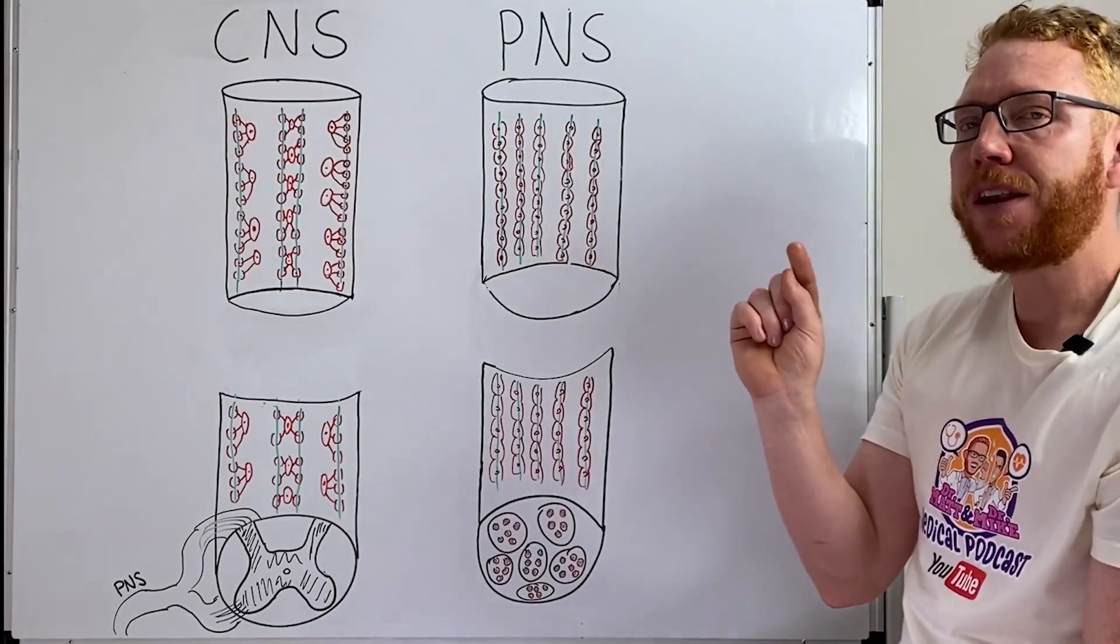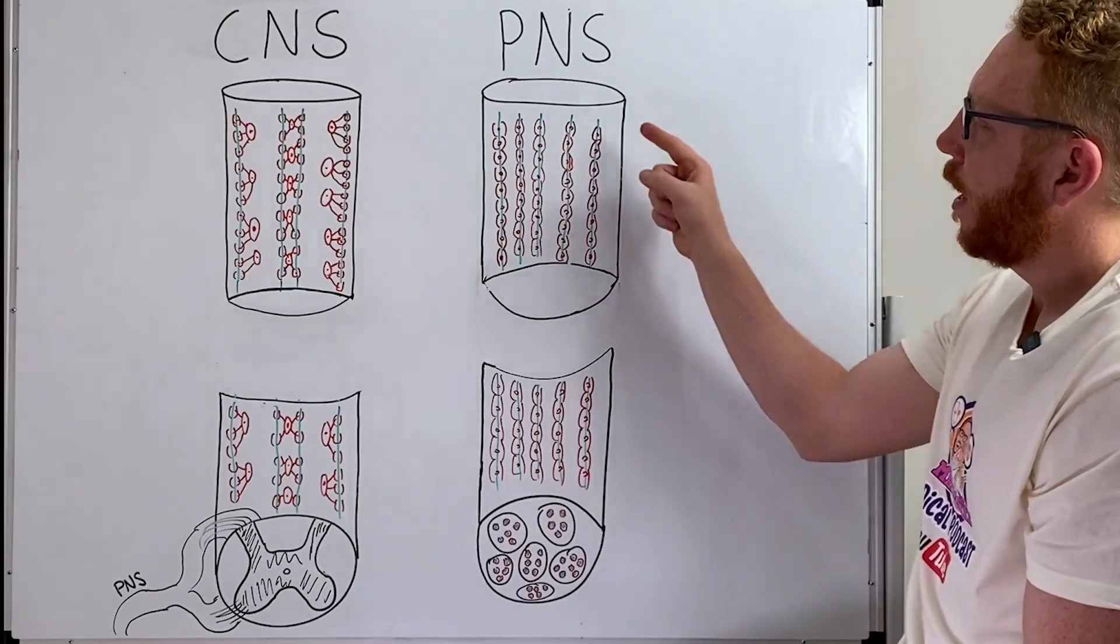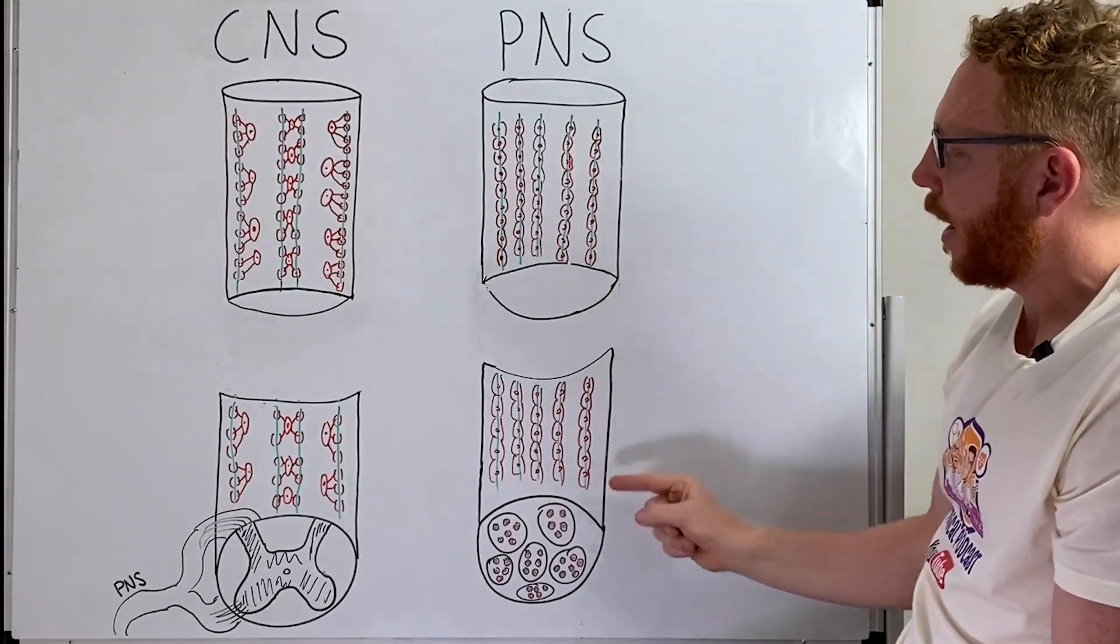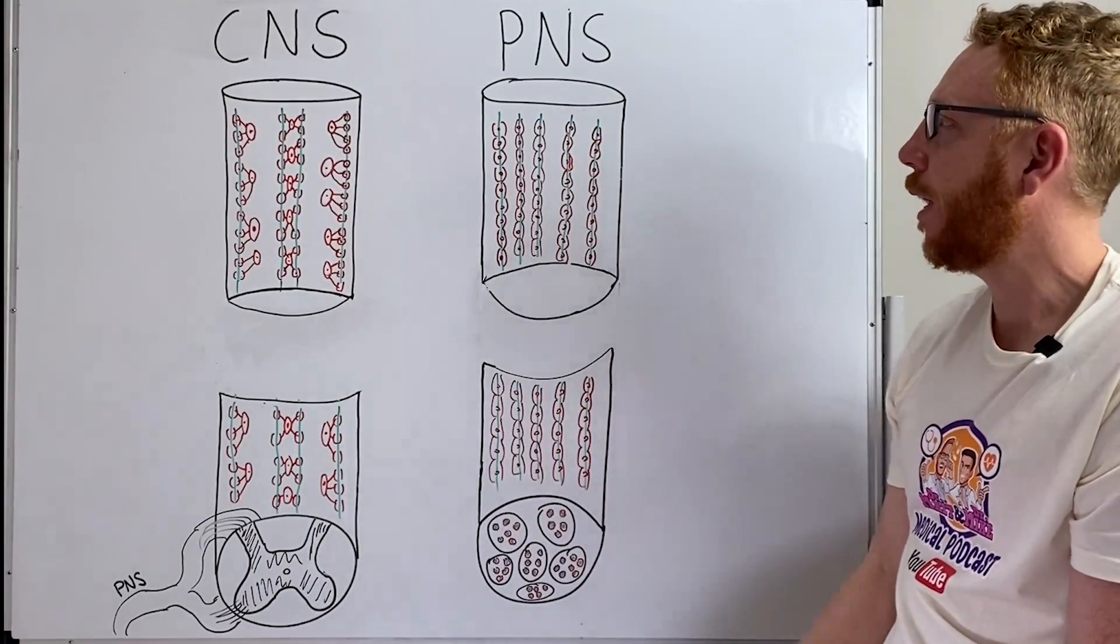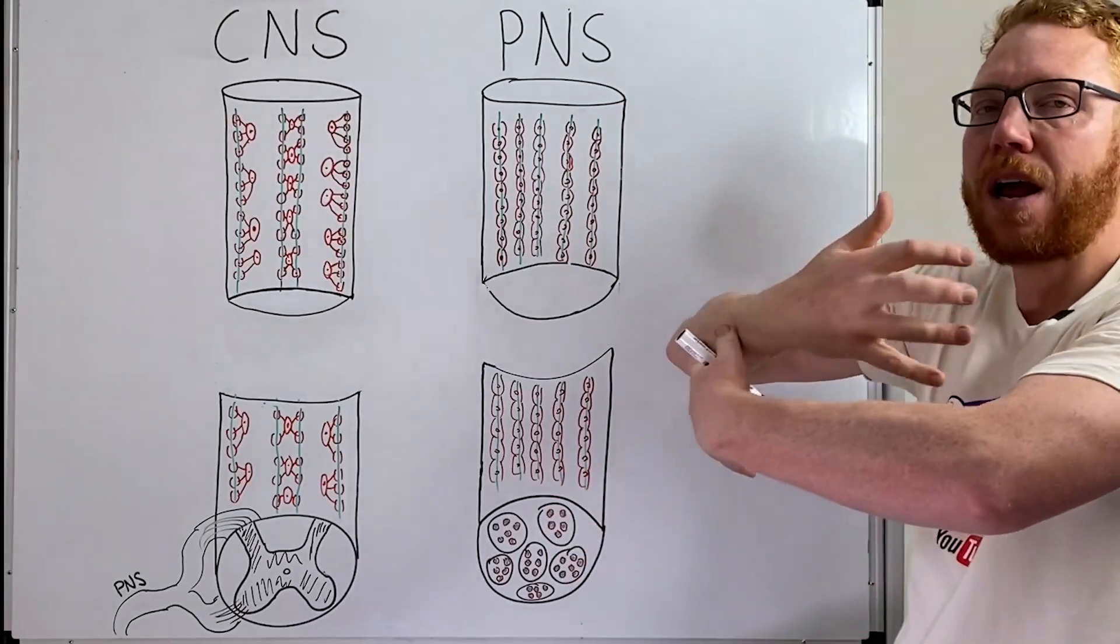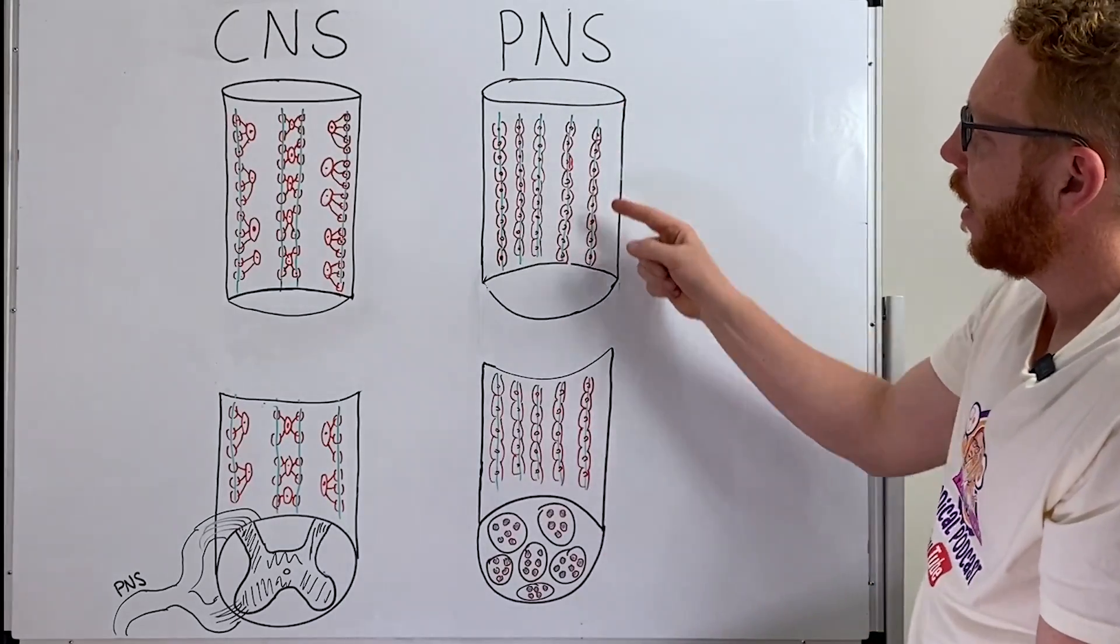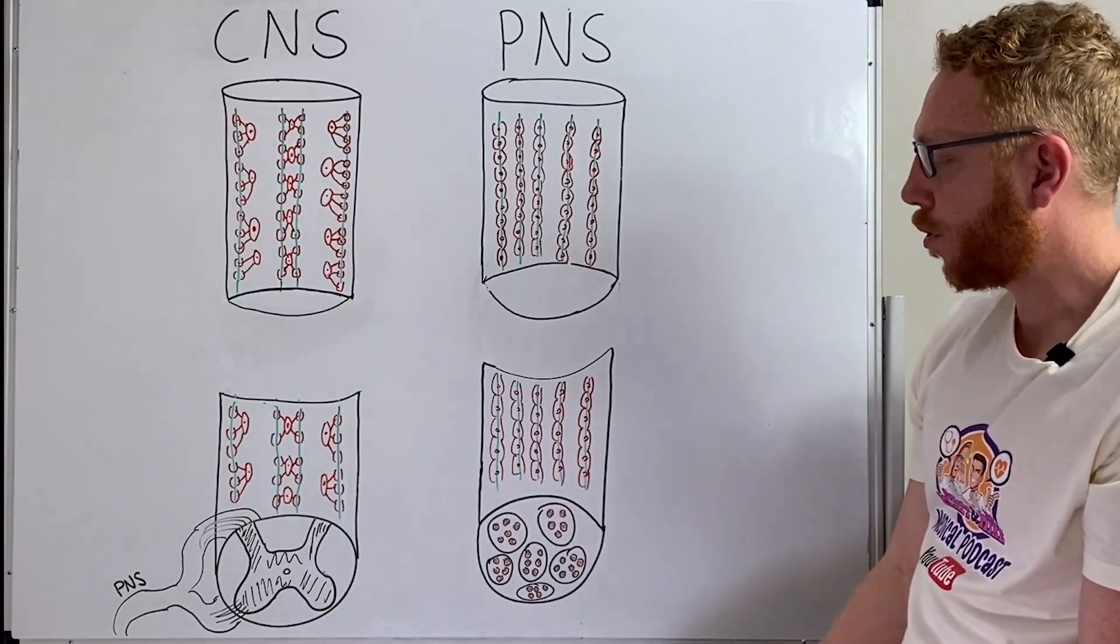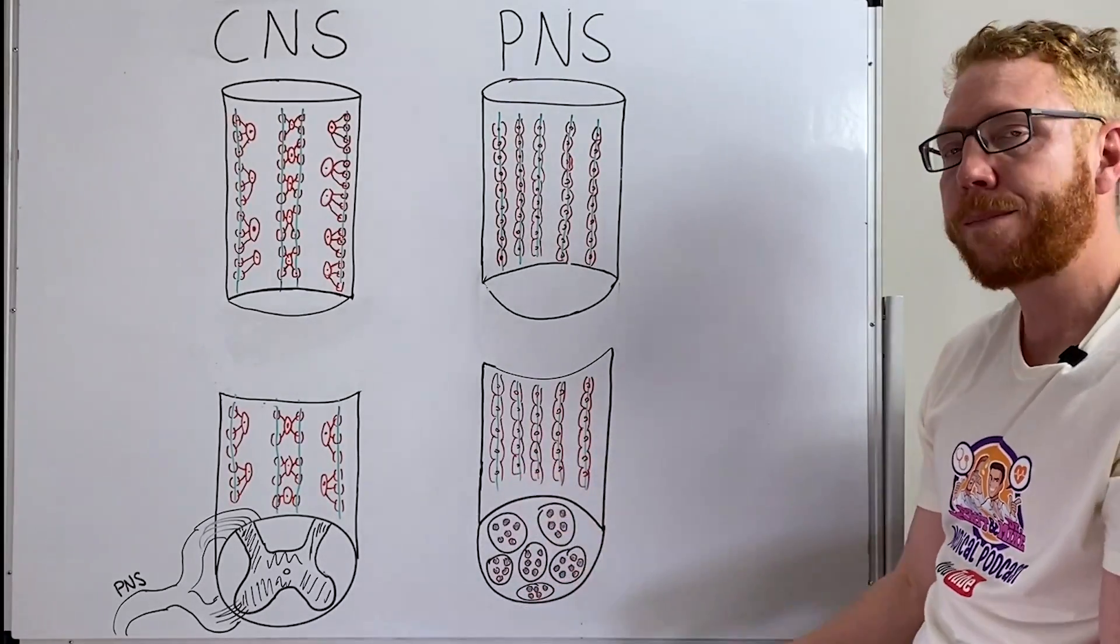Now the cell that myelinates a peripheral nerve which is different to the spinal cord is a Schwann cell. So the Schwann cell is the glial cell that myelinates each individual axon. What the Schwann cells do is they hug them, they wrap their whole body around the axon. This provides a very close contact for myelination and that essentially allows the insulation for the axon for the peripheral nerve. A peripheral nerve is basically all white matter.